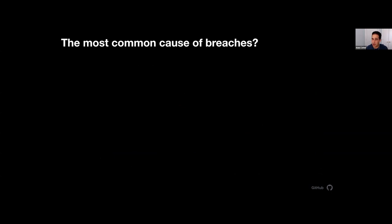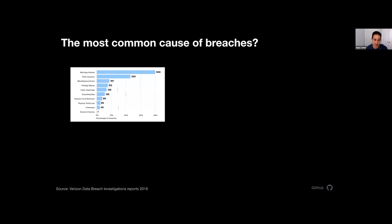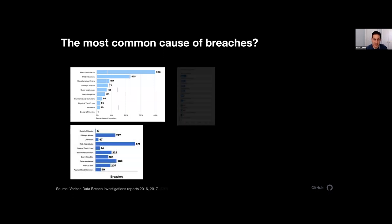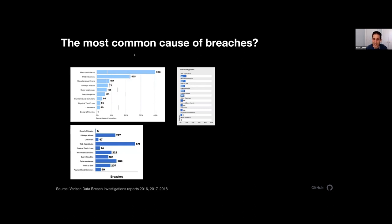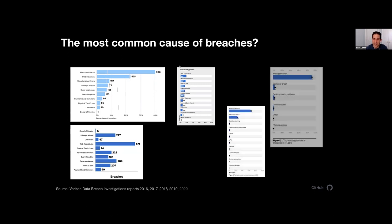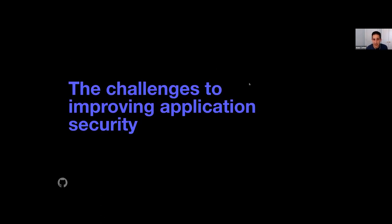What is the most common cause of breaches today? Looking at the Verizon data breach investigations report, the number one cause — consistently — has been web application attacks. It hasn't been the firewall configuration. The number one reason is usually a web app attack. So we know this is the state of application security today, and the big question is why. Why is it such an issue? There are challenges to improving application security.